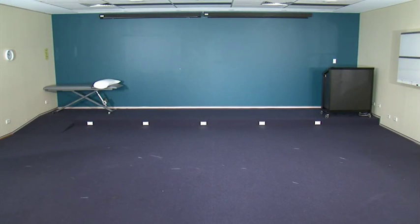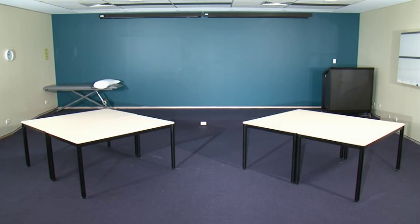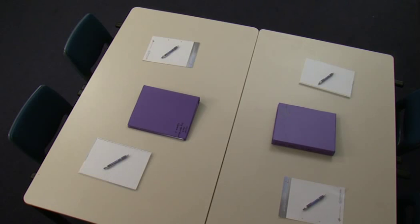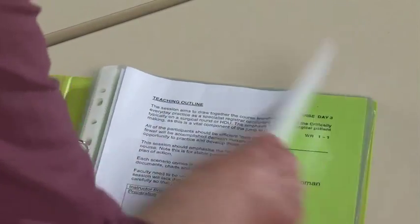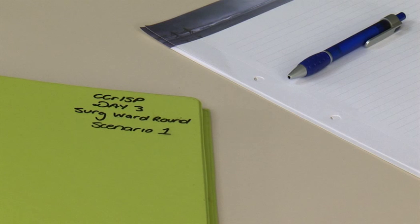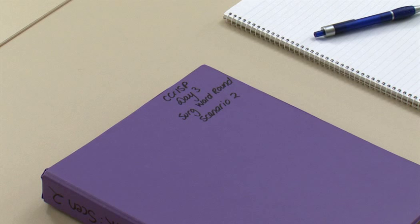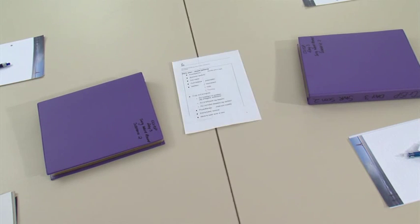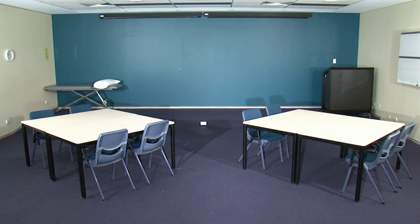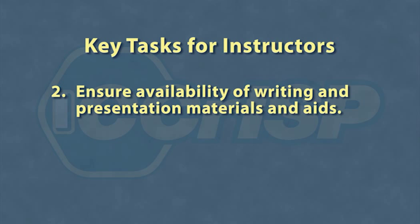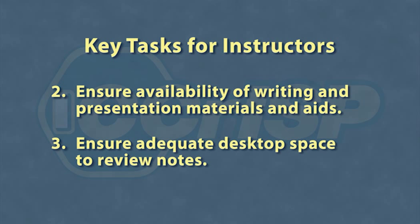The room in which the session is being held should be set up with the following: two tables, each of which can accommodate four seated participants, with enough room to spread the papers associated with the surgical ward round charts and writing materials. Adequate paper and pens should be available for the candidates. Remove instructor notes in the plastic sleeves from the folders. Two sets of charts for scenario one should be placed on one table for the first group, and two sets of charts for scenario two for the second group on the other table. Each table should have a copy of the laminated daily plan for stable patients. The CRISP algorithm poster should be visible within the room.